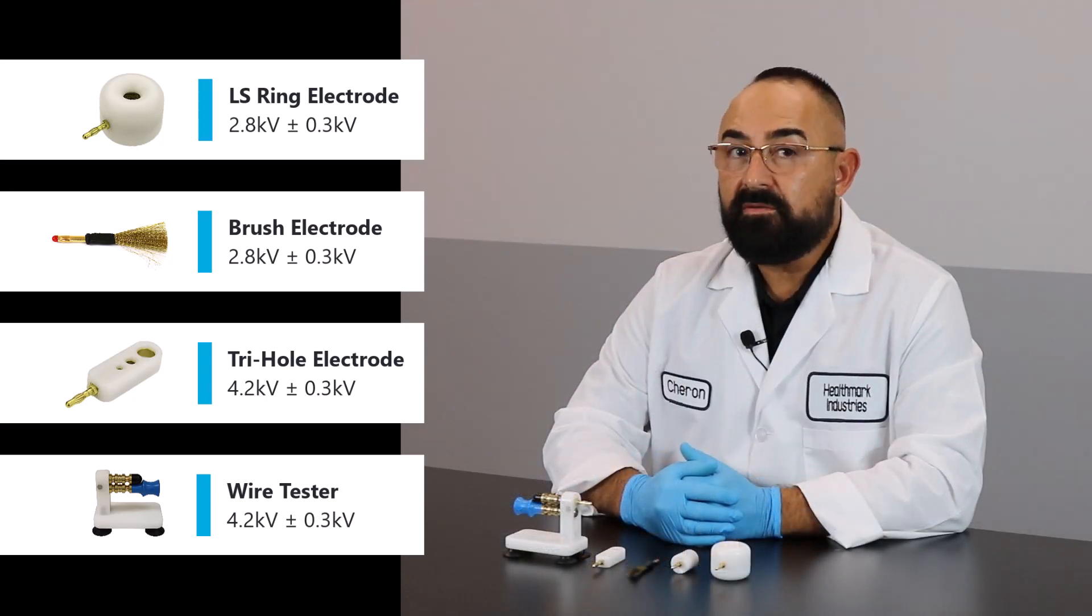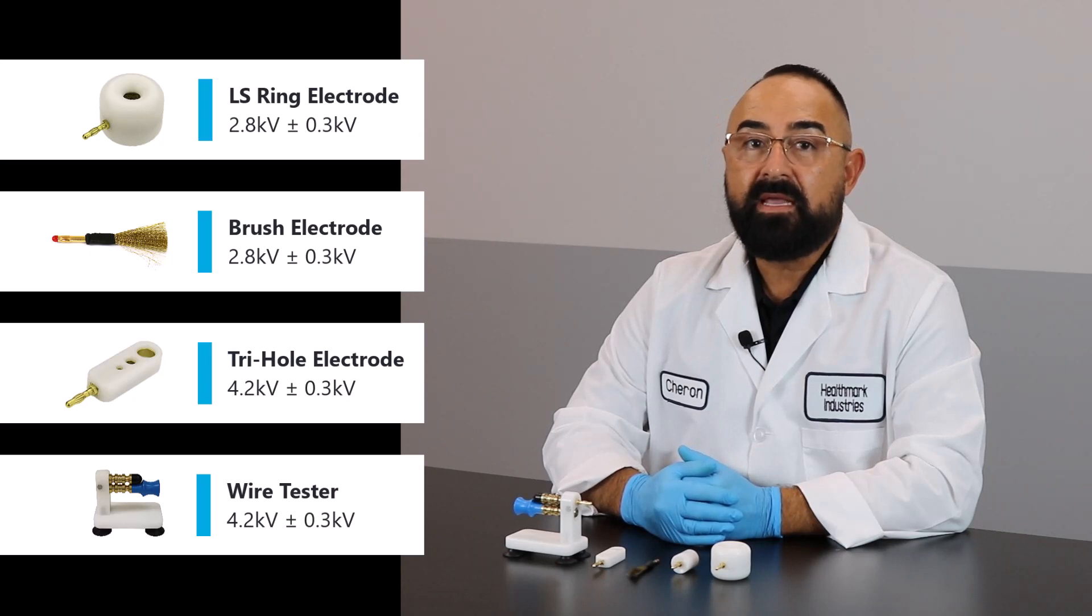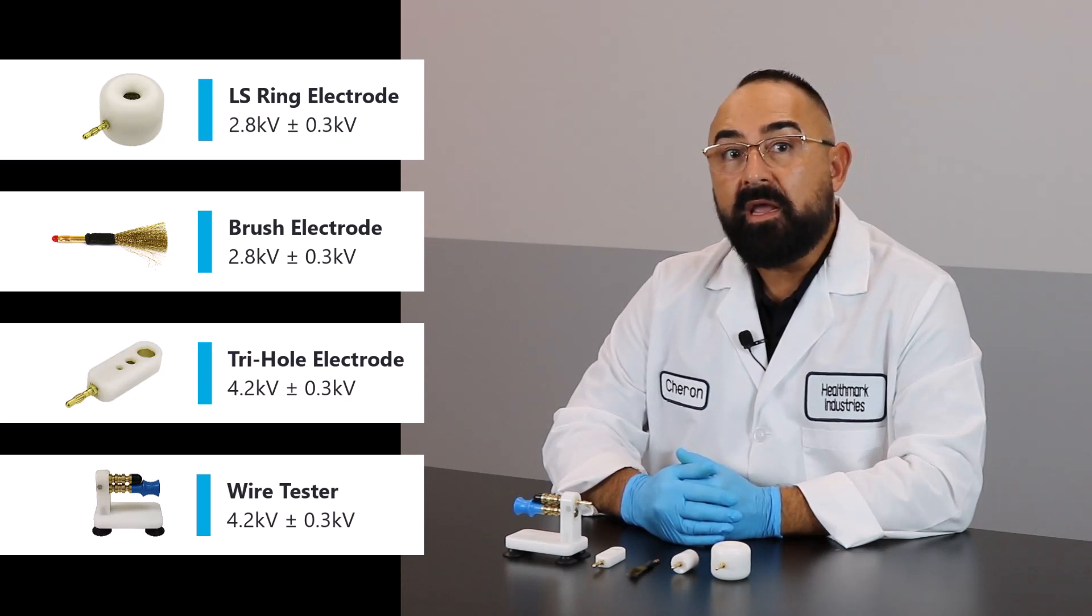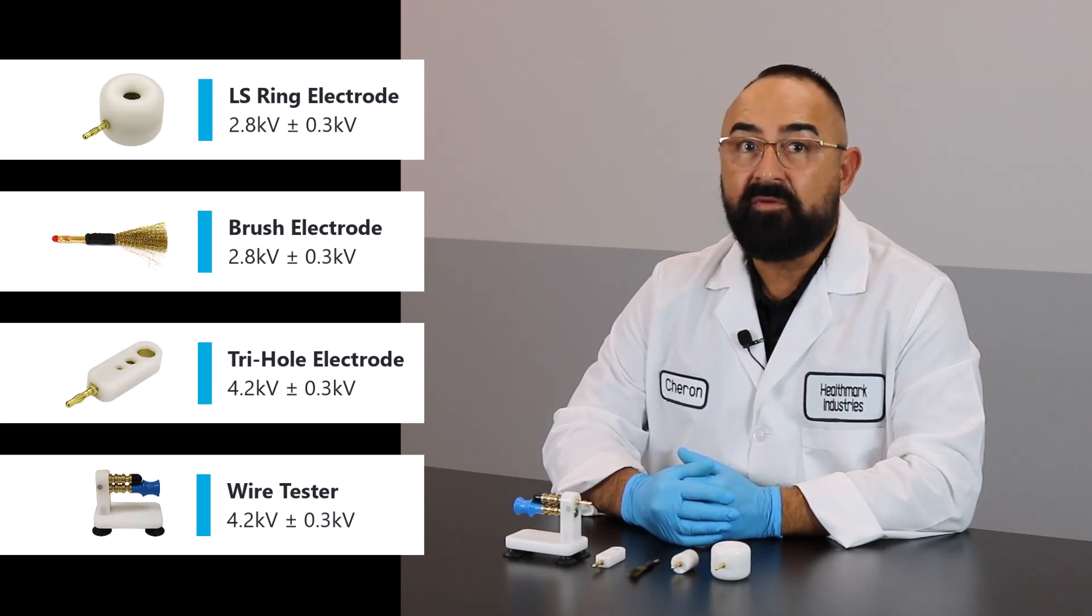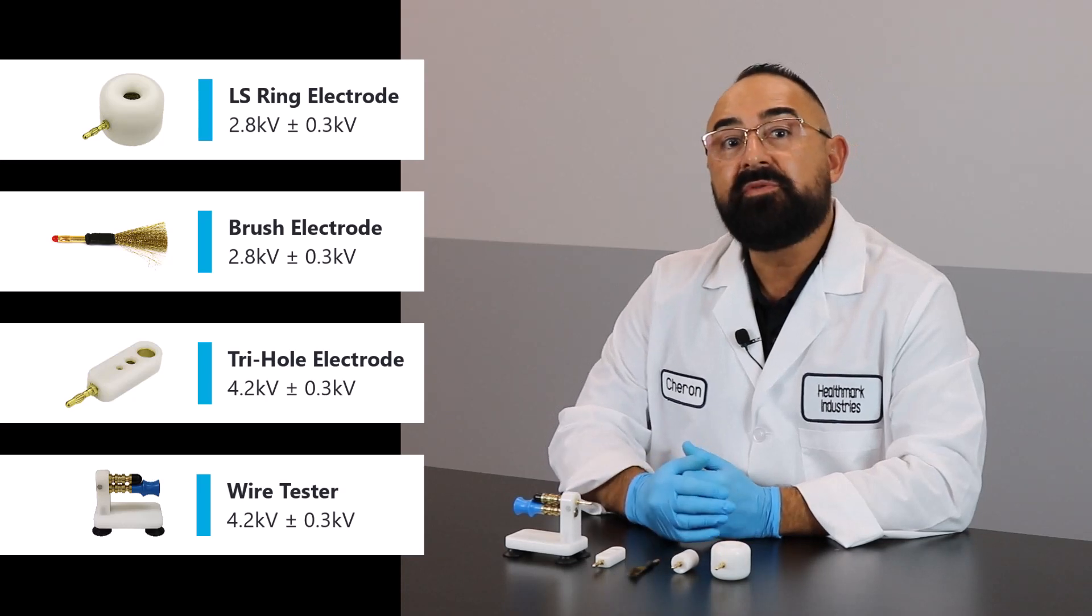If the voltage is too low, then you may not be able to detect the damage in that type of insulation on an instrument. If the voltage is too high, you could damage the insulation as well. This is why it's so important to make sure that you're setting the voltage to exactly what the accessory requires.